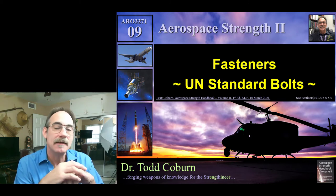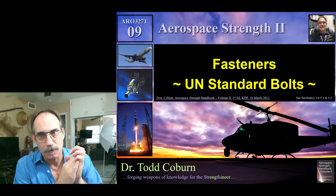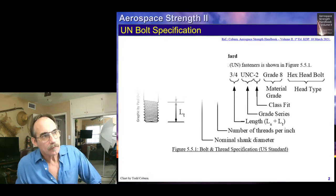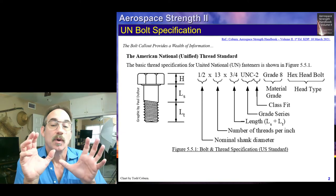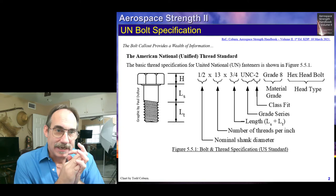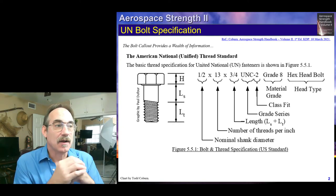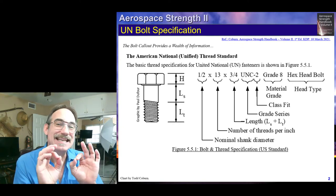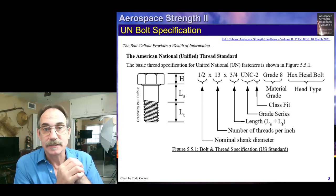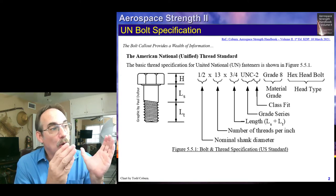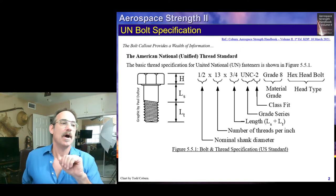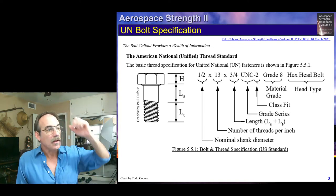We're going to focus on the UN fastener bolt standard, the UN bolt standard. When we're using standard bolts like the United National Bolt Thread, these bolts are defined with a call-out that gives a ton of information that we're going to need to do our structural analysis. A typical bolt will look like this figure here, and we'll get a call-out that looks like what is shown right here.